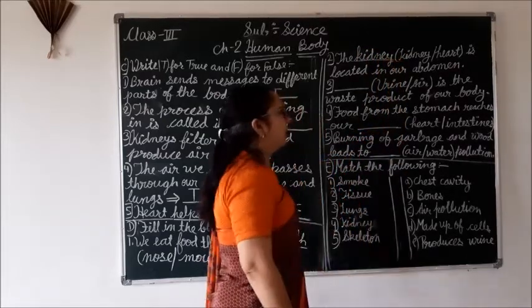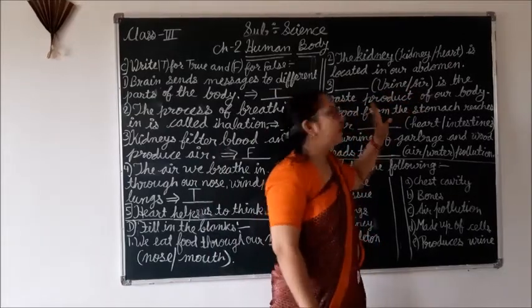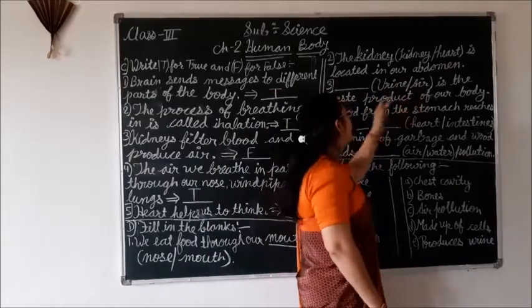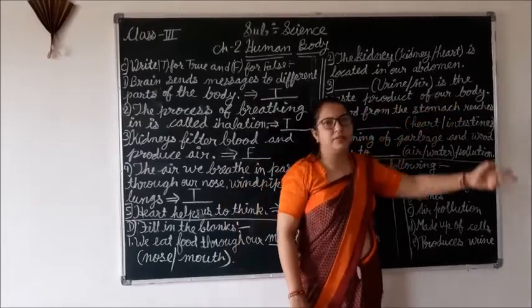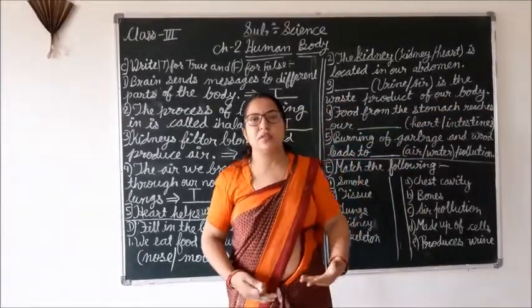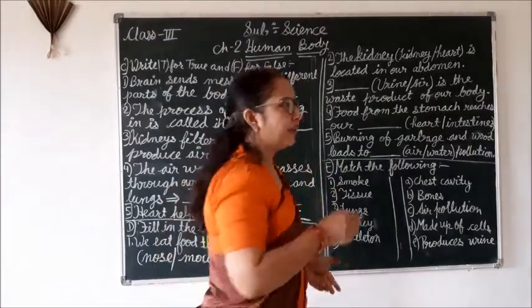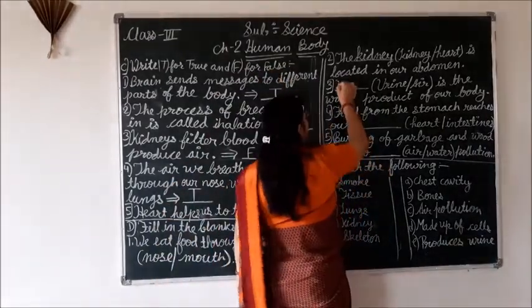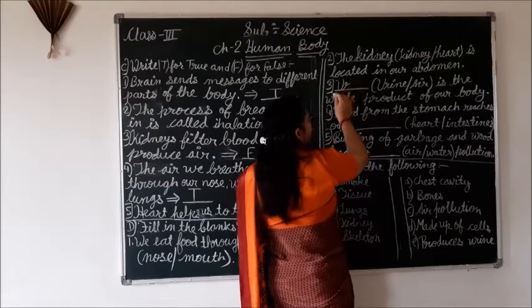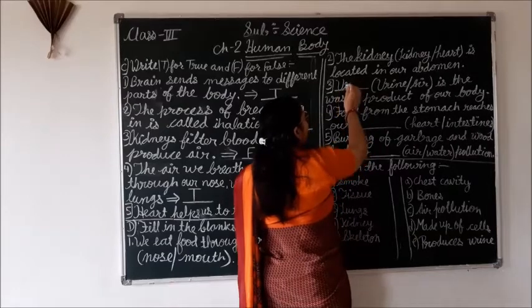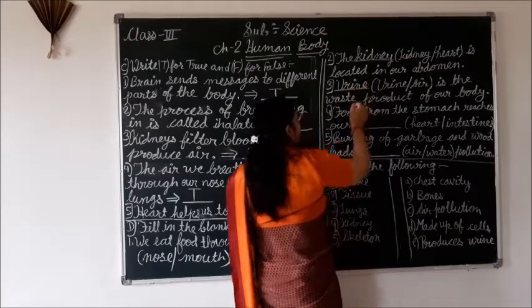Next: hormone, urine, or air — which is the waste product of our body? The answer is urine. Urine is the waste product. U-R-I-N-E, urine.